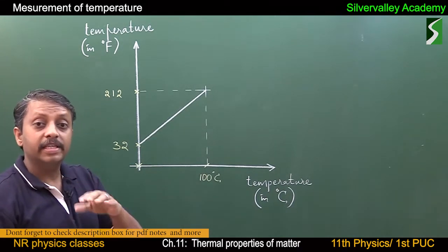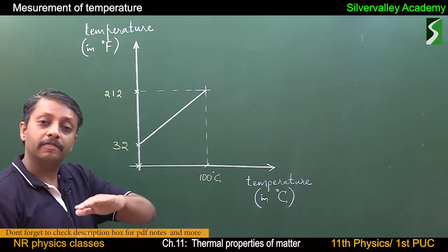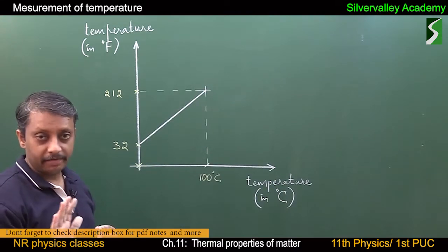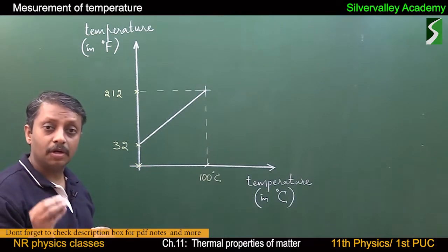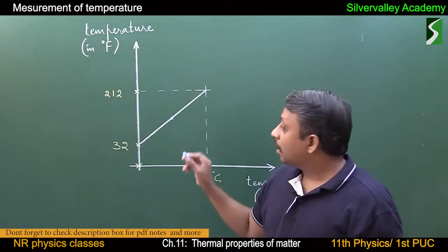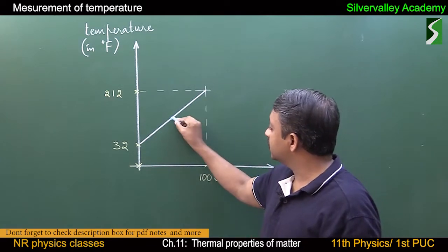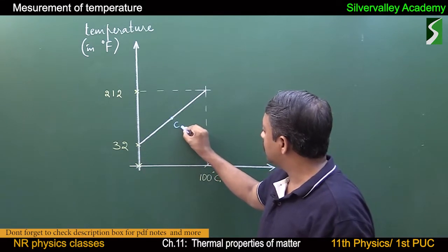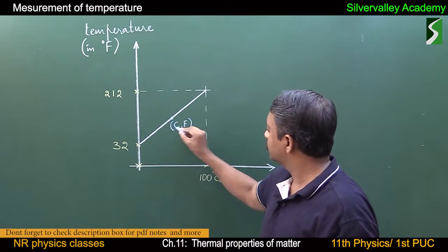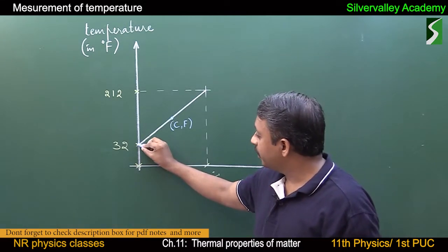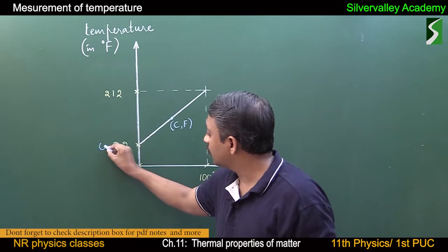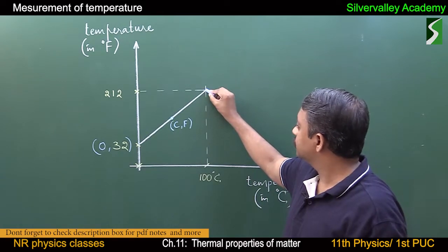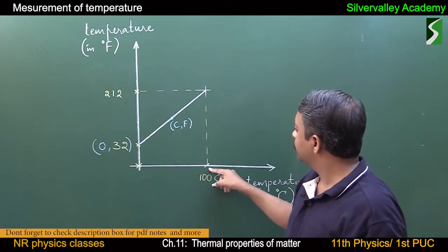Now let us see how to get the equation to convert from Celsius to Fahrenheit and Fahrenheit to Celsius. Note that the derivation is not important, but let us understand how to get the equation. Consider a point on this straight line whose coordinates are (C, F). One known point is (0, 32) and another is (100, 212).